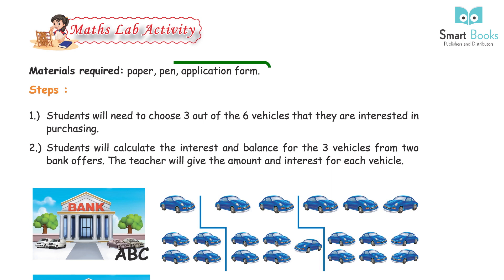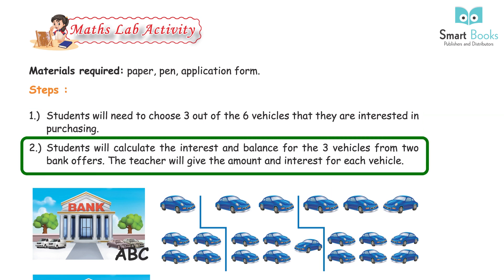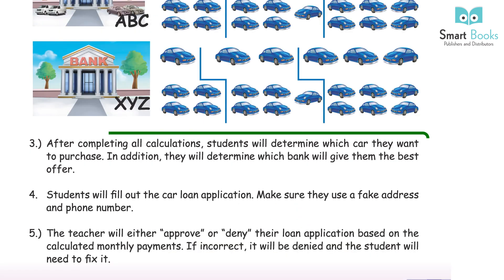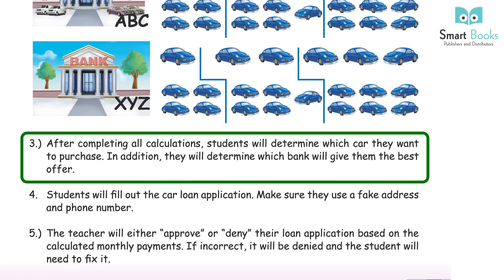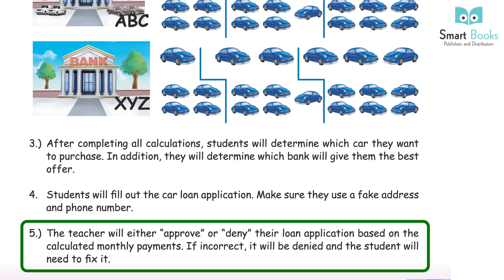Maths Lab Activity. Materials required: paper, pen, application form. Steps: (1) Students will choose three out of six vehicles they are interested in purchasing. (2) Students will calculate the interest and balance for those three vehicles from two bank offers. The teacher will give the amount and interest for each vehicle. (3) After completing calculations, students will determine which car they want and which bank gives the best offer. (4) Students will fill out the car loan application using a fake address and phone number. (5) The teacher will approve or deny the loan application based on calculated monthly payments; if incorrect, it will be denied and students must fix it.